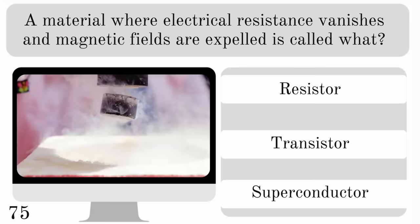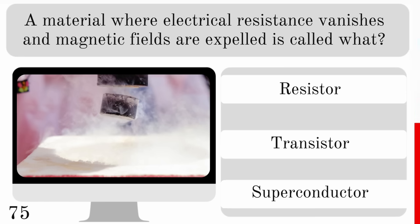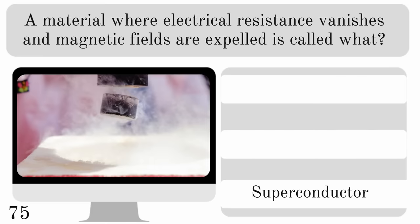A material where electrical resistance vanishes and magnetic fields are expelled is called what? A resistor, transistor or superconductor? The answer is superconductor.